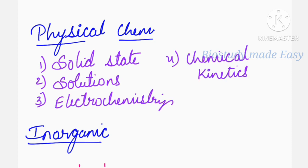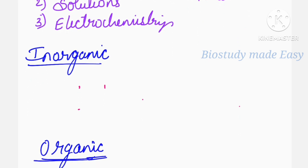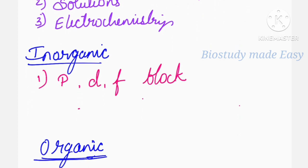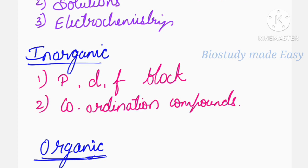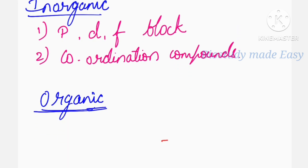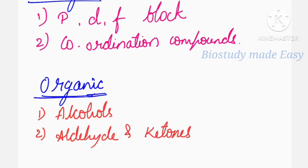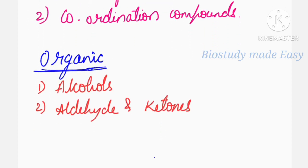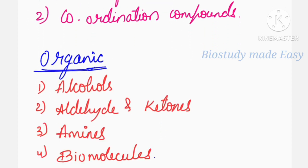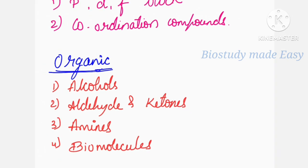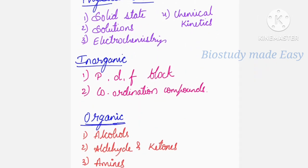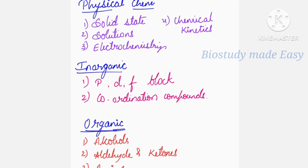For Inorganic Chemistry, the important chapters are P Block, D Block, F Block Elements, and Coordination Compounds. For Organic Chemistry, the important chapters are Alcohols, Aldehydes and Ketones, Amines, and Biomolecules. These are the important chapters from Chemistry.